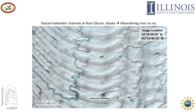Here is another type of meandering river — a meandering river on ice. These are glacial meltwater channels at Root Glacier in Alaska. These rivers change their shape by melting the bed and the walls of the channel. They may be found on glaciers but also on icebergs, and may also be seen anywhere that ice forms.